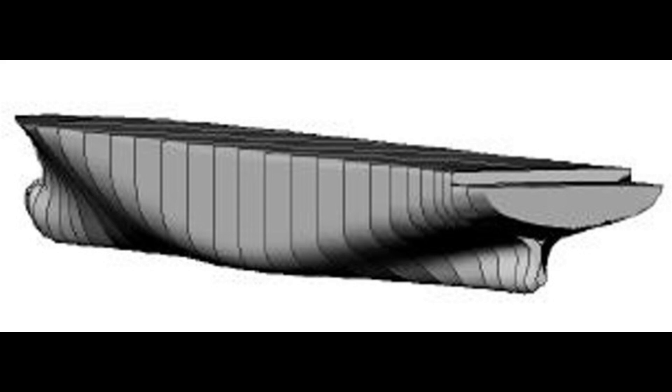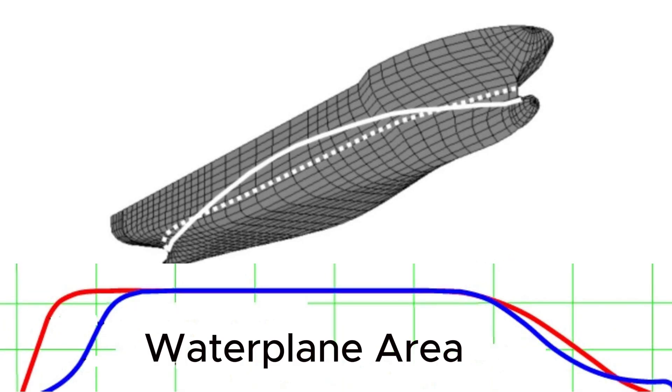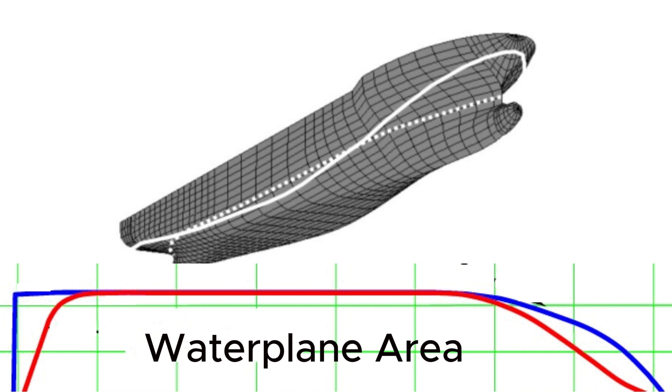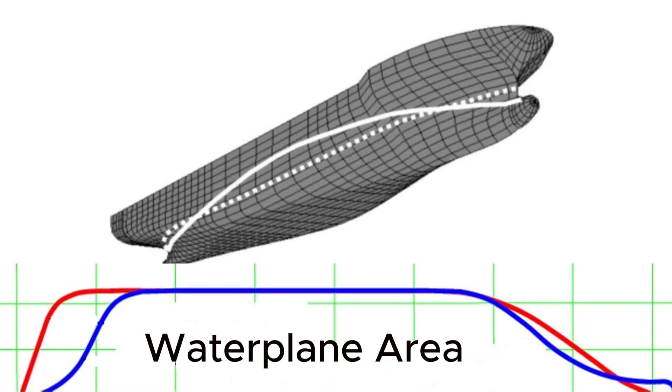Unlike the bow and stern, the midship section is wall-sided. This means that no change occurs in the water plane width with variations in draft. As the ship moves through the waves, its water plane area changes periodically. Let's examine the changes in the water plane that occur in two situations.